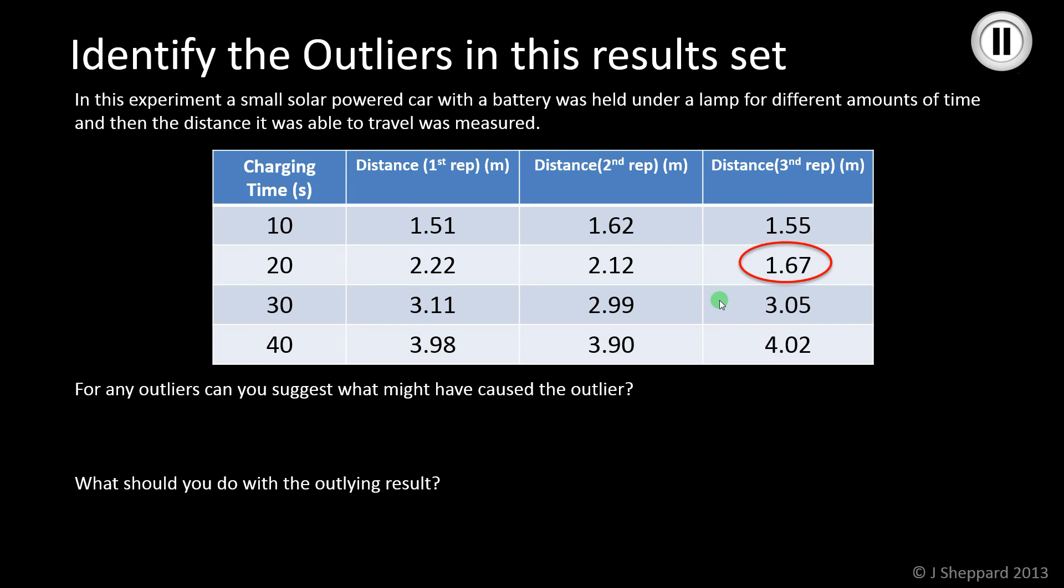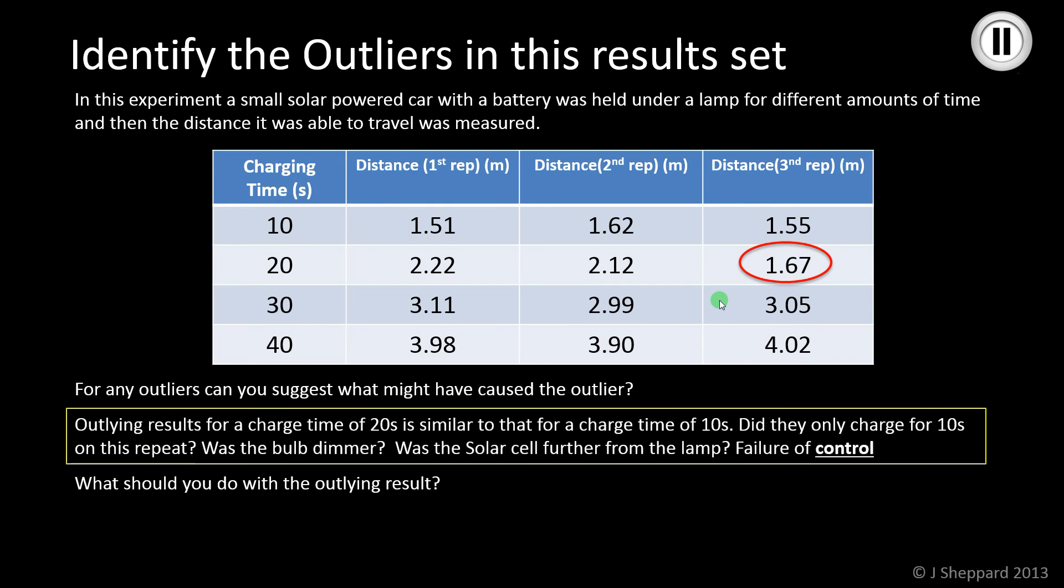The most obvious one that is correct is the 1.67. I think that's probably the obvious outlier there. There are several reasons you could suggest. It's very similar to the 10-second charging time. Is it possible they've accidentally done it for 10 seconds? Did the bulb get dimmer for some reason? Was the solar cell kept further away from the lamp? Both of those last two things are a failure to properly control things in your experiment. You're trying to assess the effect of changing your independent variable on your dependent variable. If you change other things, like the distance to the solar cell from the lamp and the brightness of the lamp, that will affect your results. So outliers can come from a failure of control.